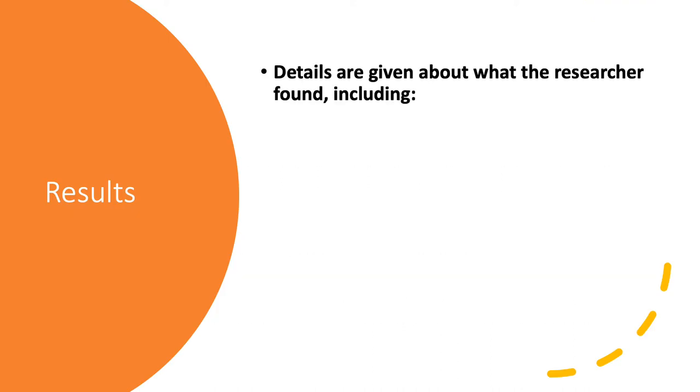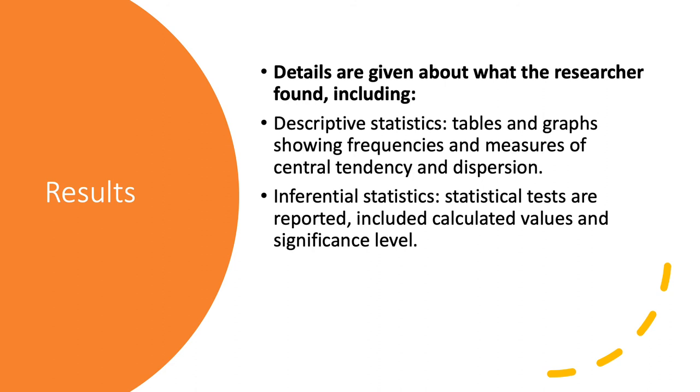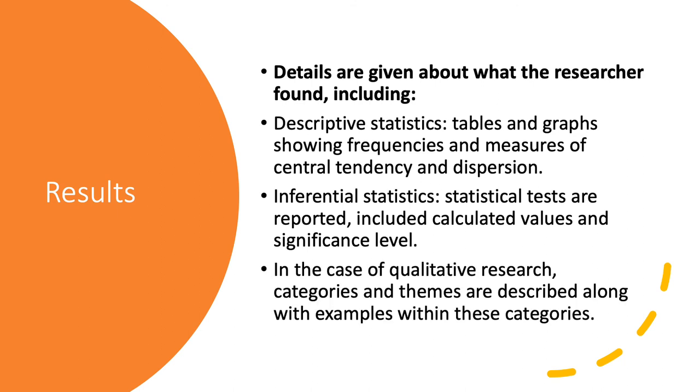And then we state our results. So, what did we find? So, we might use descriptive statistics, we might use tables and graphs and dispersion, measures of central tendency, etc. And we also do our inferential statistics. So, which statistical test did we use to analyse our data? We include calculated values, critical values, significance levels, etc. And we state whether our results were significant at this stage as well. If it's qualitative research, then categories and themes are described, along with examples of these categories. So, you might have done a thematic analysis or a content analysis. And in that case, you would have to describe the categories and the themes.